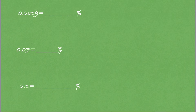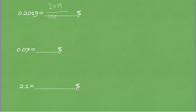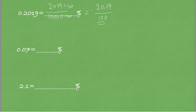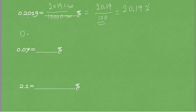For 0.2019, after the decimal point there are 4 digits, so the fraction is 2019 out of 10,000. To convert the denominator to 100, I divide both numerator and denominator by 100, which gives 20.19 out of 100. Writing the numerator as it is with a percent sign, 0.2019 equals 20.19%. Don't forget the decimal after 20.